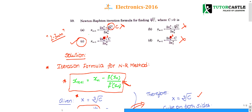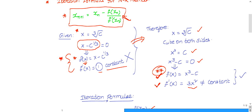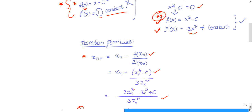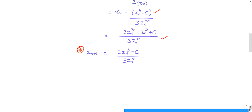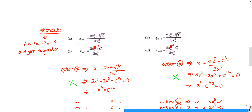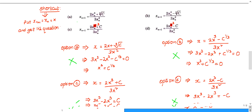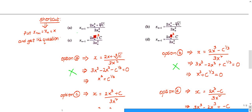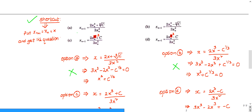There is a shortcut for the NR method which takes hardly 30 seconds. The shortcut is: in each option, substitute x_{n+1} = x and x_n = x everywhere, then simplify. After simplifying, you should get the original question back — that is, x = C^(1/3).